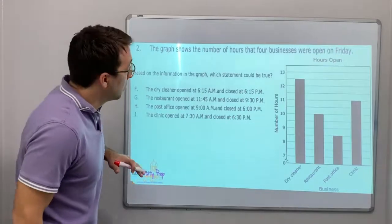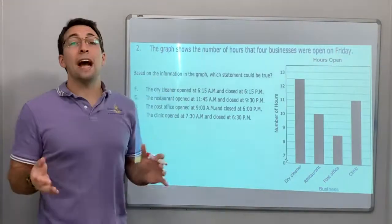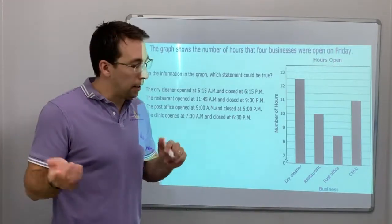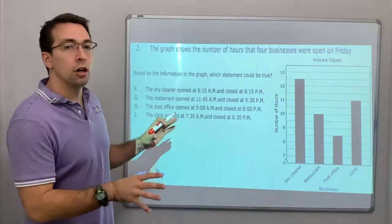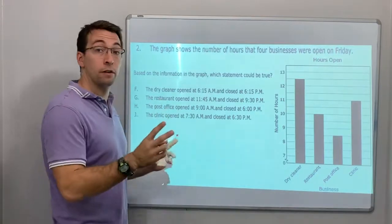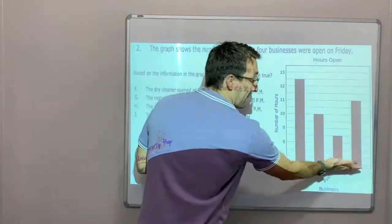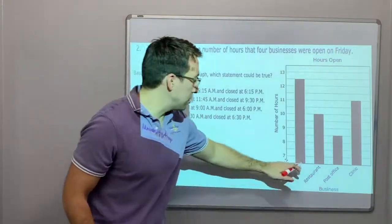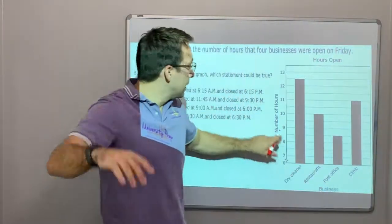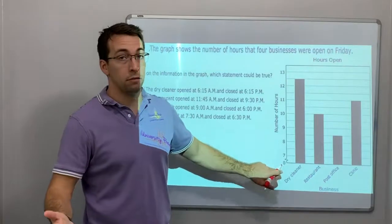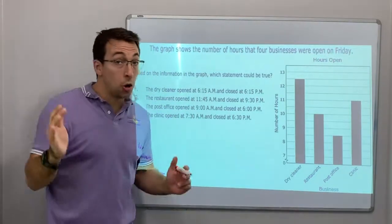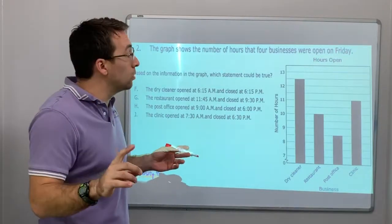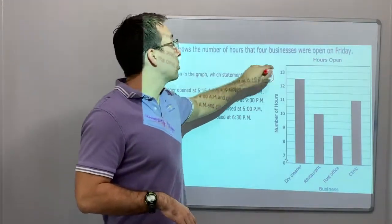Question number two: the graph shows the number of hours that four businesses were open on Friday. Remember, all these charts and graphs show two variables simultaneously — the x-value has a variable and the y is a variable. Here are the four different businesses, and here's the number of hours they were open. Based on the information in the graph, which statement could be true?